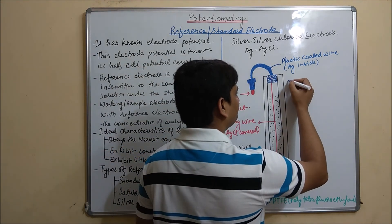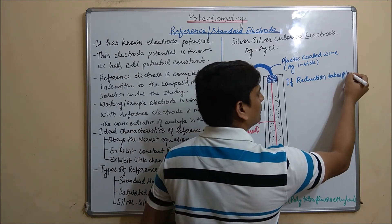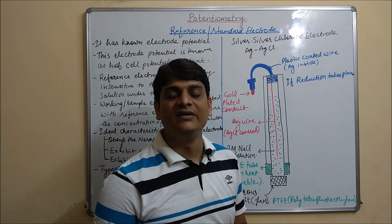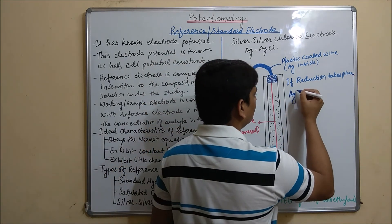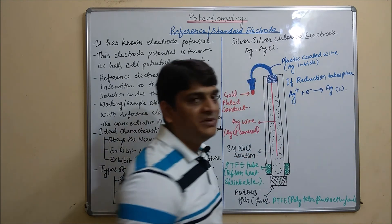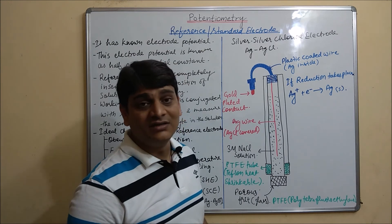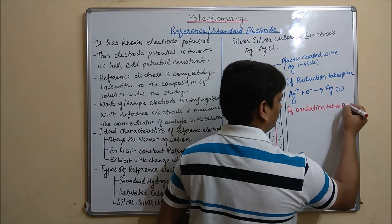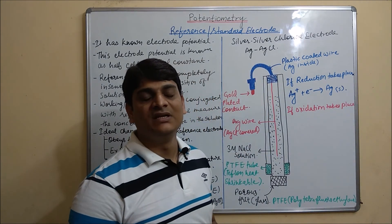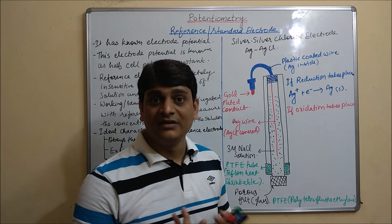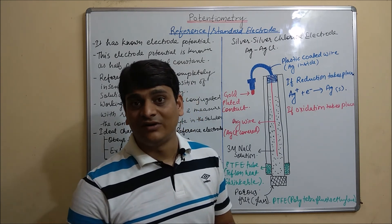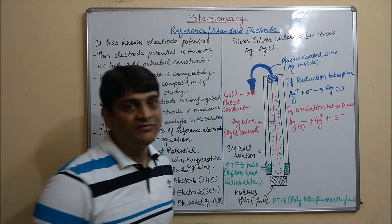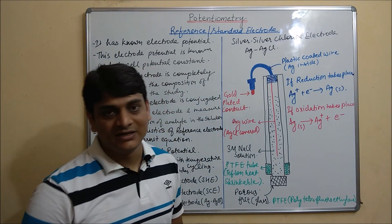Taking the example of reduction first: if reduction takes place in this electrode, Ag+ will gain an electron and convert into Ag metal. If oxidation takes place, then Ag will give an electron and convert into the form of Ag+. This is the working and details of the Ag-AgCl electrode.